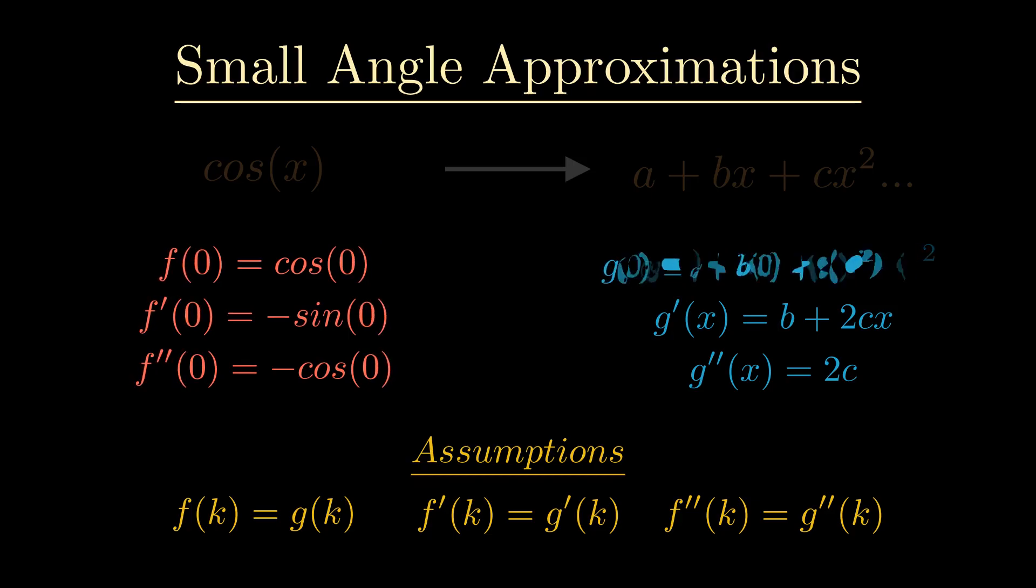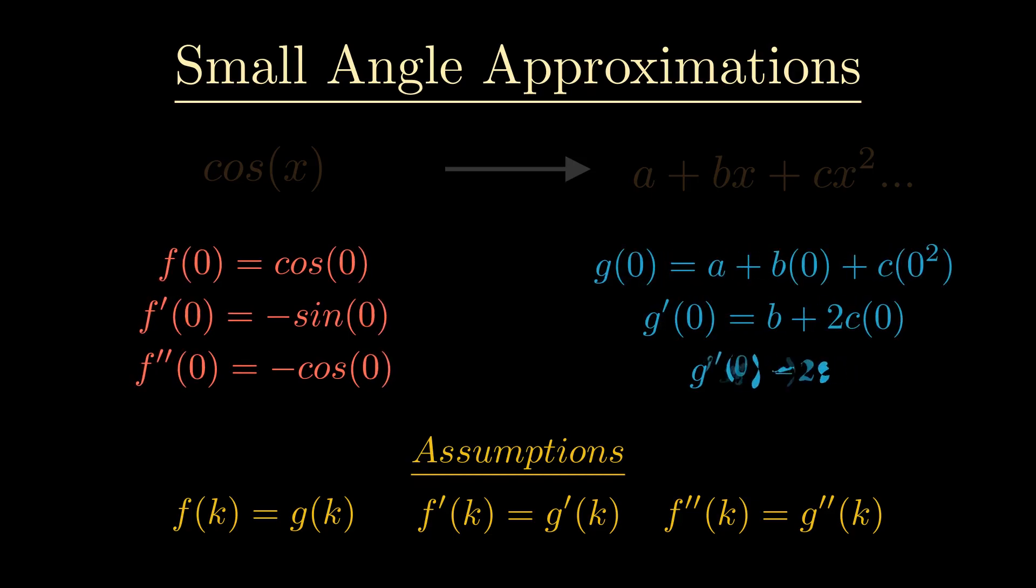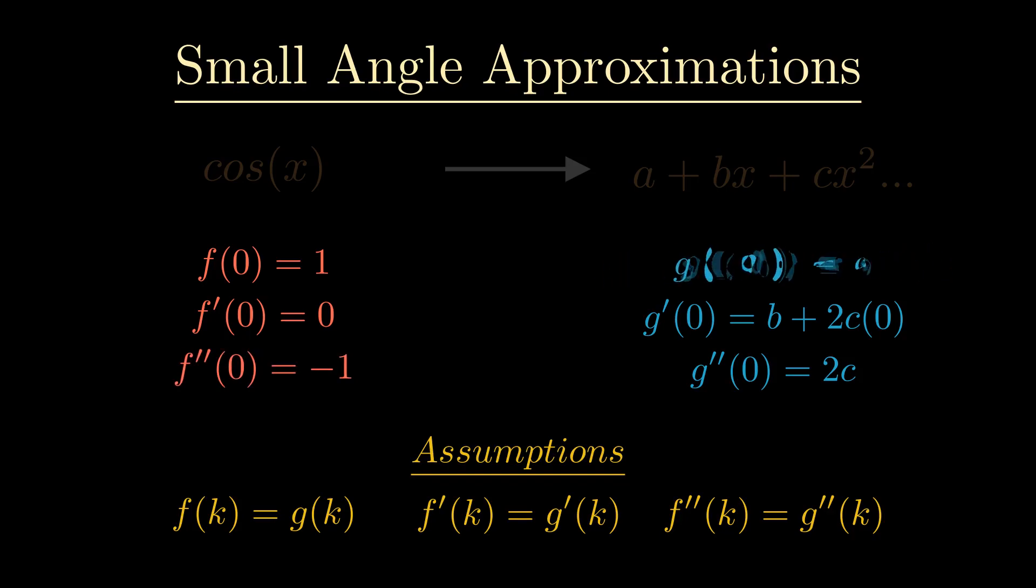Something interesting is going to happen. On the left all the functions will simplify to a single number, and on the right the functions will simplify to a single constant term. Now all we need to do is compare coefficients. a equals one, b equals zero, and c equals negative one half.